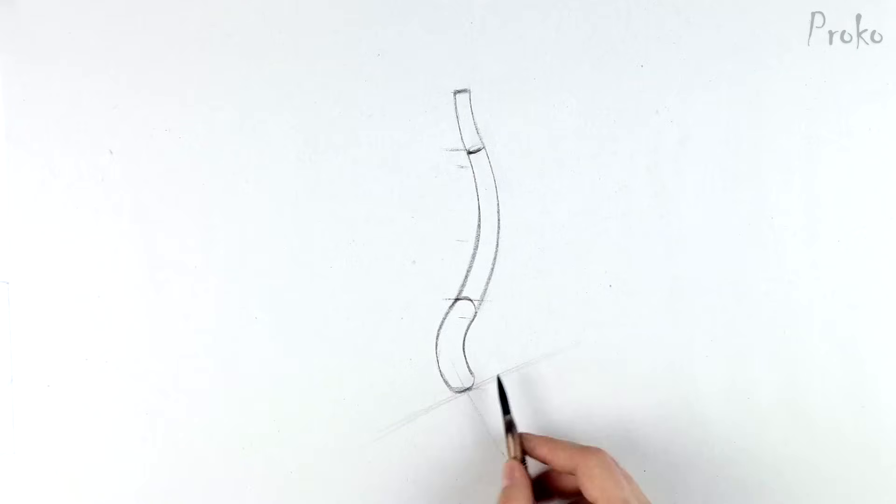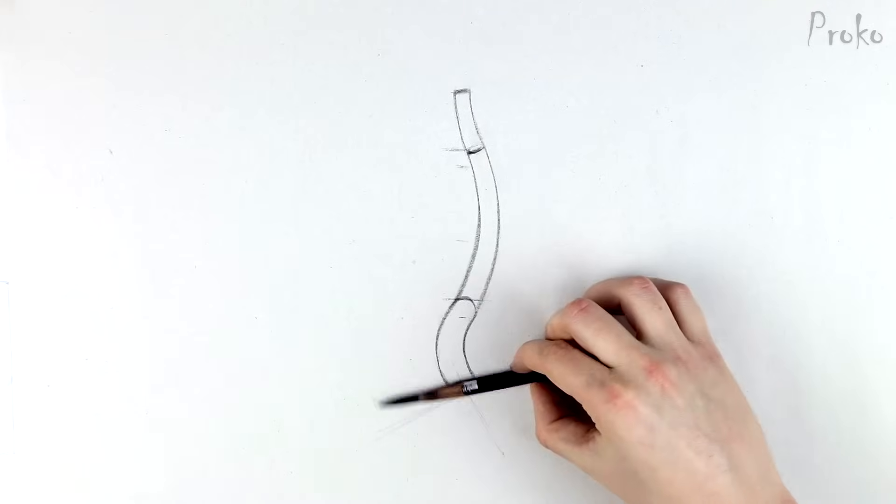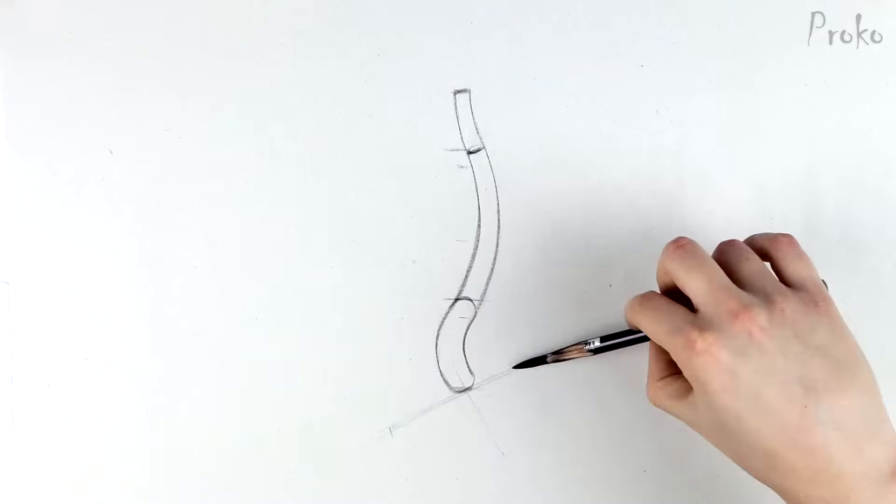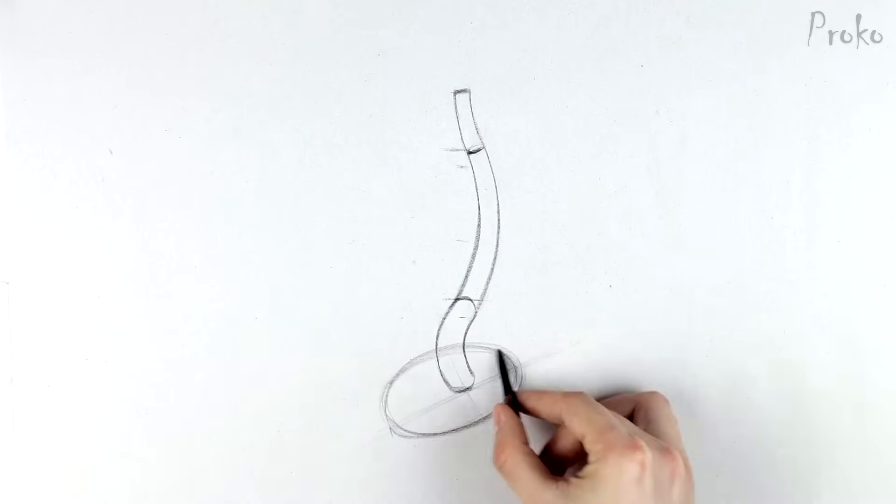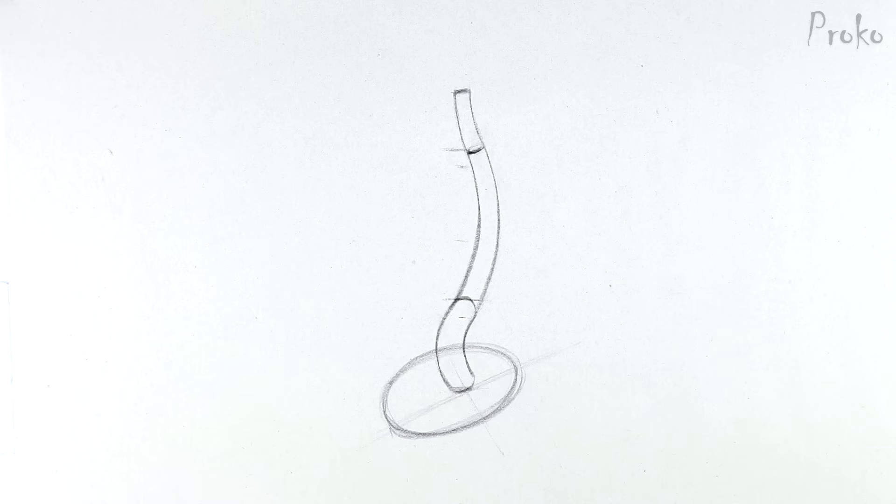For this lesson, let's simplify the pelvis into a cylinder, which is narrower at the bottom. I like to start with an ellipse for the top plane. Again, remember that the pelvis is tilted forward, so you'll see the top plane more than if the cylinder was vertical.